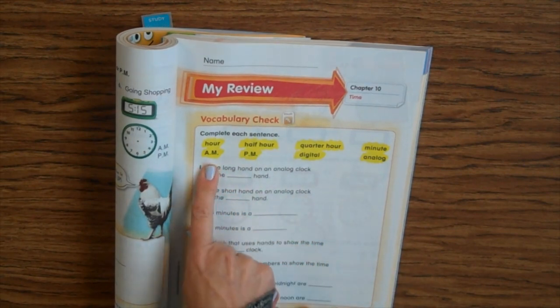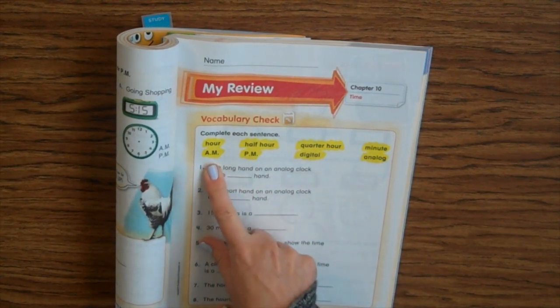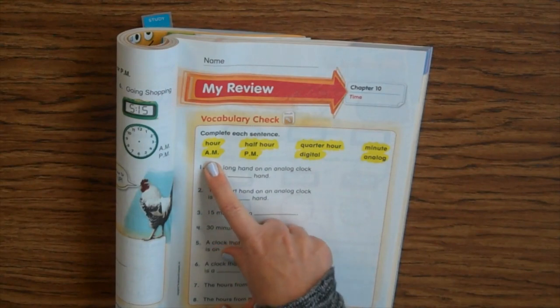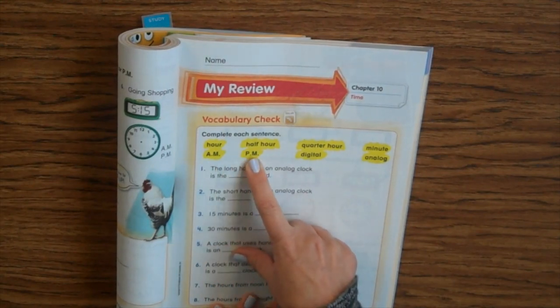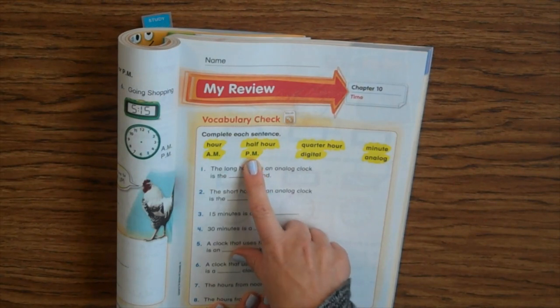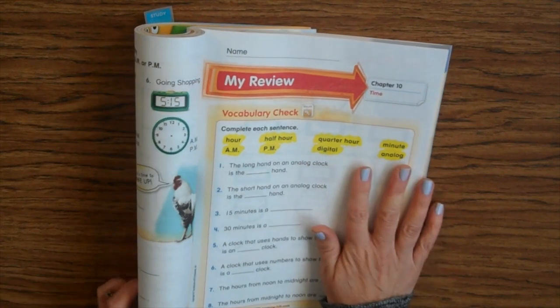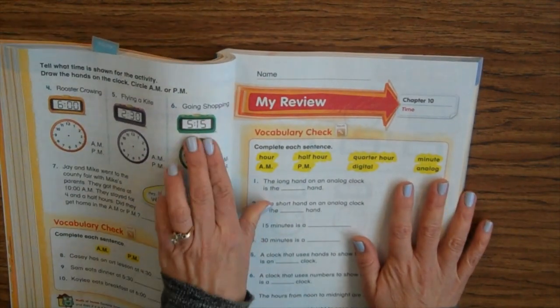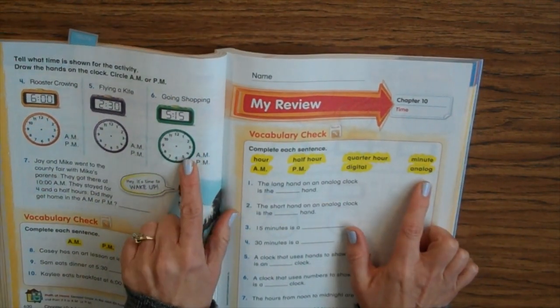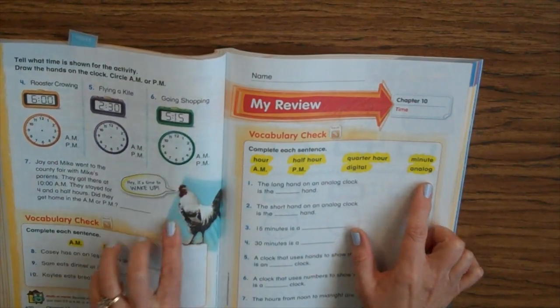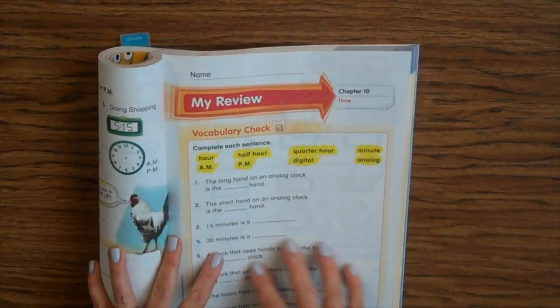A.M. is in the morning. Remember, it's from midnight to noon. P.M. is the afternoon and evening. It's from noon to midnight. Digital is this clock over here. Analog is the clock like this, but of course it has hands. So you need to just fill in those sentences.